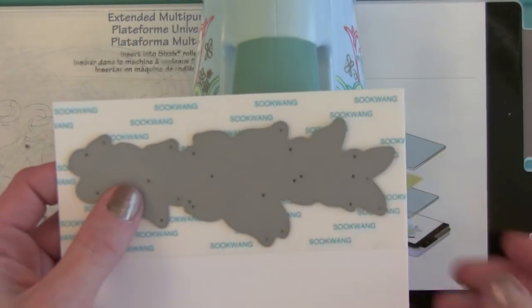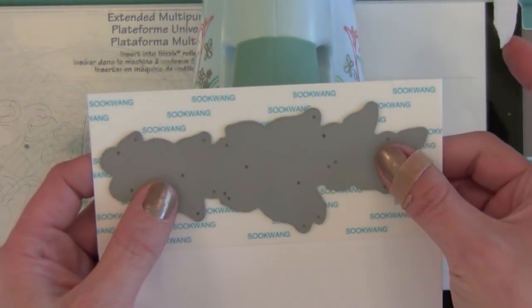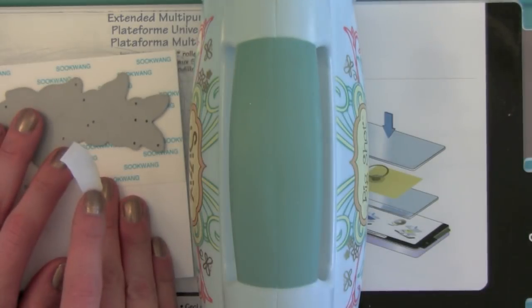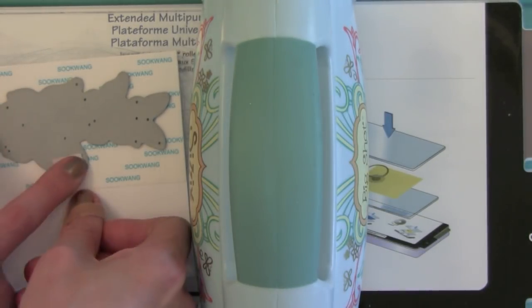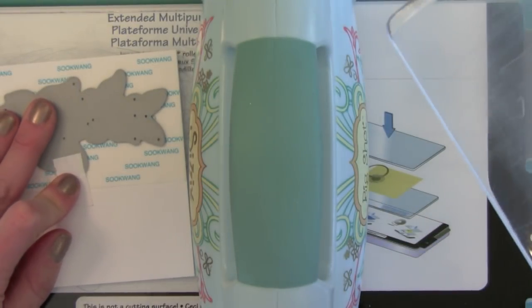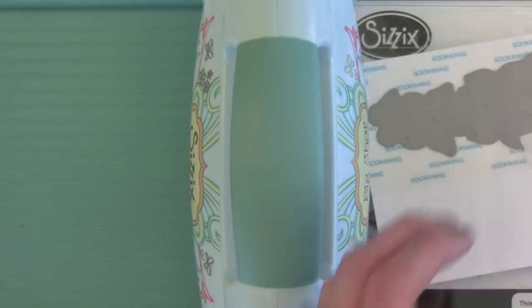So I'm going to take this die from Simon Says Stamp and lay it face down onto the side of my paper that has the tape on it. I'm going to put a little piece of sticky tape to hold it in place as I run it through my Big Shot as I would any normal wafer thin die. You can do this on any kind of die cut machine.